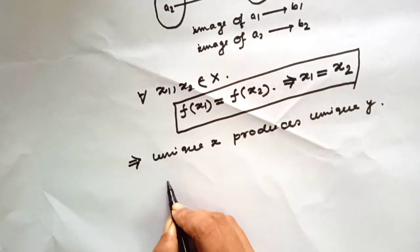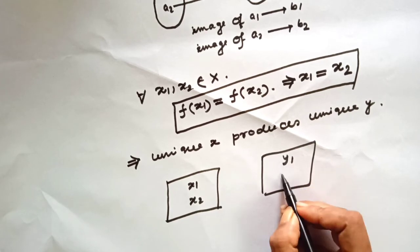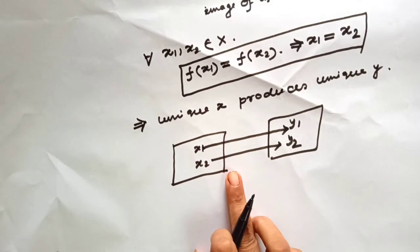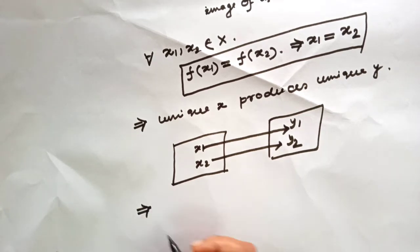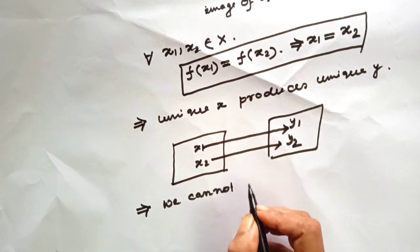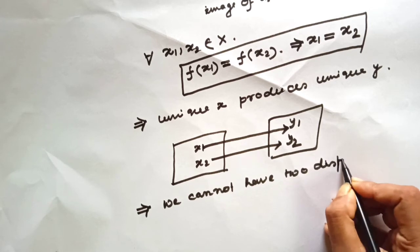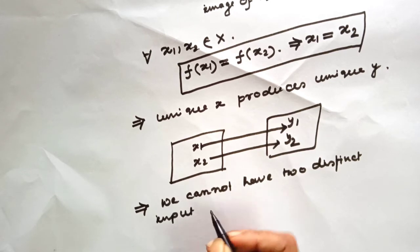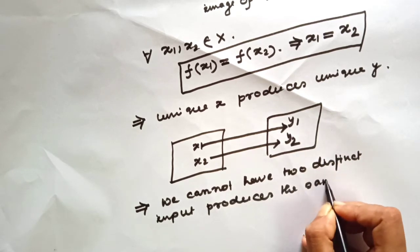Let's see the picture. Here x1 and x2 are in the domain, and y1 and y2 are in the codomain. x1 maps to y1 and x2 maps to y2. This is the picture of a one-one function — we cannot have two distinct inputs that produce the same output.